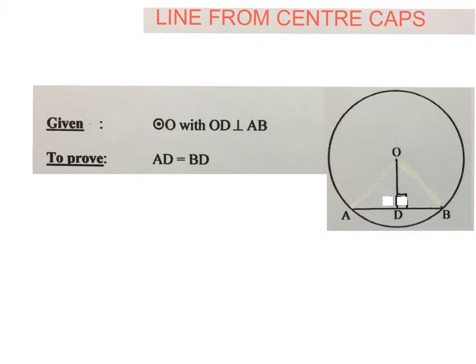In a question paper, this is what you will see if they're going to ask you to prove this theorem. They will give you a small picture like this. They will write next to it: we are telling you that we have a circle with a center O, with OD perpendicular to AB. So we've got this OD perpendicular to AB. And they ask you, you have to prove that AD is equal to DB. So this is what the question will look like.